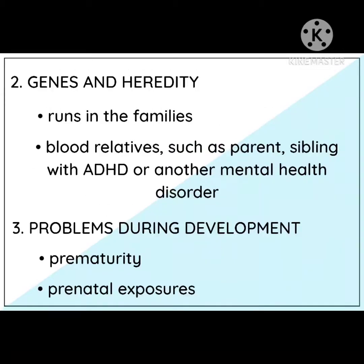Second is genes and heredity — it runs in the family, with blood relatives such as parents or siblings having ADHD or another mental health disorder. A child with ADHD has a 1 in 4 chance of having a parent with ADHD. It is also likely that another close family member, such as a sibling, will also have ADHD.